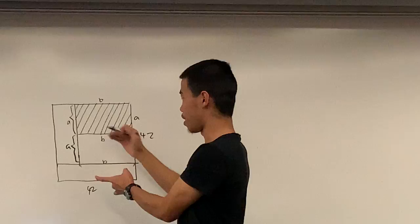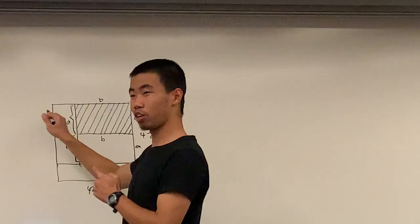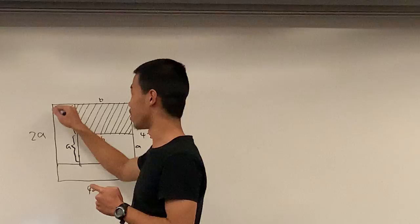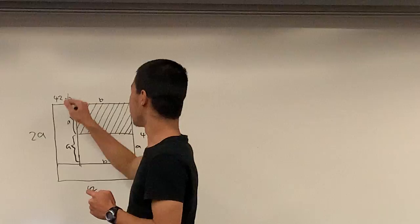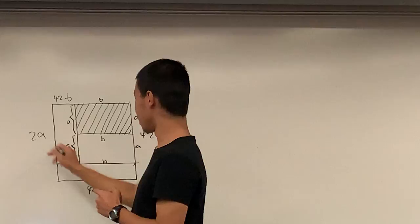Using that, you guys can all see that if this is A and this part is also A, the entire thing is 2A, right? This is 2A. And we see that this one's 42 minus B, yeah, because the entire thing is 42. That part's B, you take out the B, now 42 minus B.